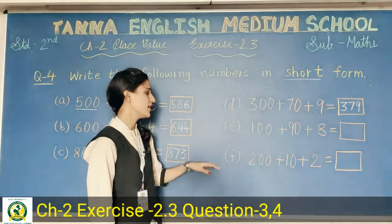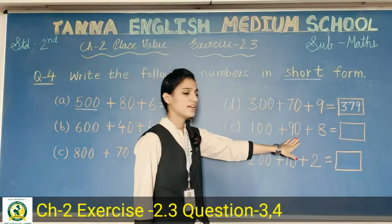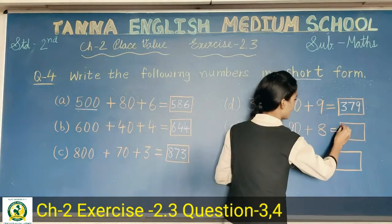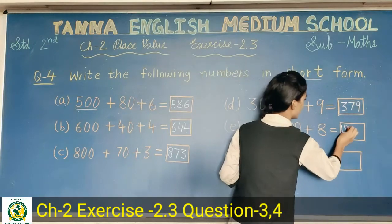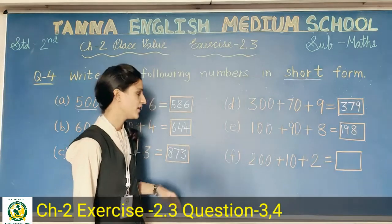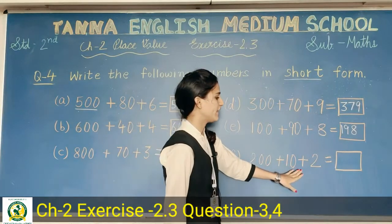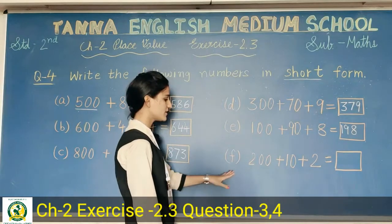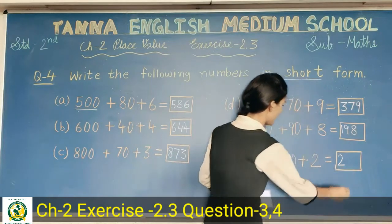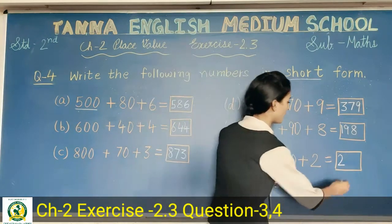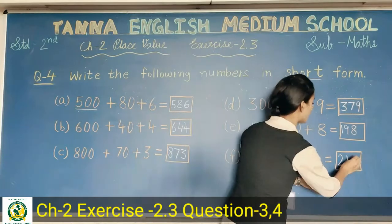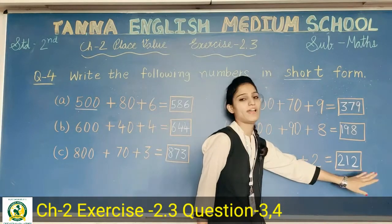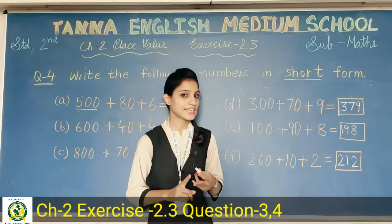Next: one hundred ninety-eight. Write one hundred, then ninety-eight together — one hundred and ninety-eight. Then last: two hundred, ten, and two. Two hundred — write two. Ten means one ten — write one at tens place. Then write two at ones place. Two hundred and twelve.